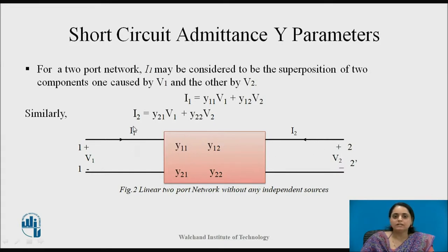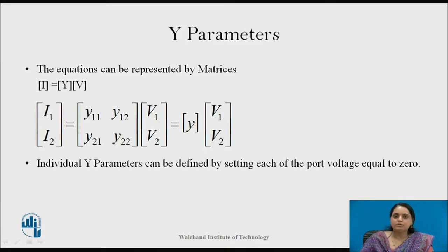Similarly, current I2 can be considered as the superposition of components caused by voltage sources V1 and V2. The equations for both are shown here. These same equations can be represented in matrix form, where the center matrix represents the Y parameters. The individual Y parameters can be obtained by setting any of the port voltages equal to zero.